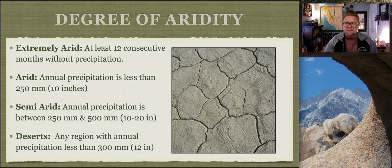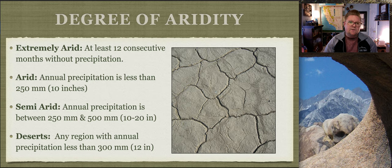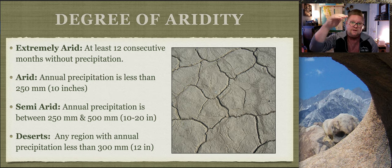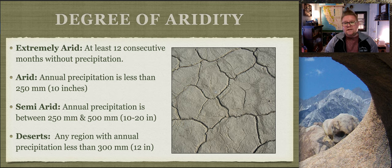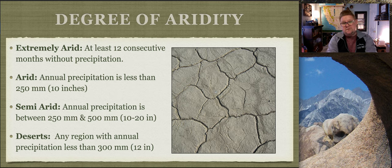Can places with ice be considered a desert? Actually, yes. When we talk more about deserts, we'll see there's a special definition for that. The next level is arid, which means you have less than 250 millimeters of precipitation, equivalent to about 10 inches of rain.